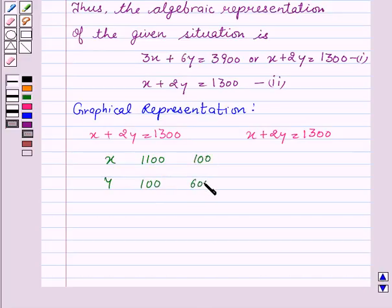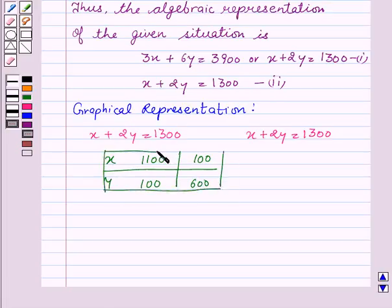Now, we will plot these points on the graph. Here, point A with coordinates 1100 and 100, and point B with coordinates 100 and 600.